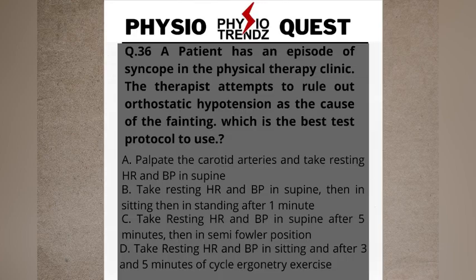Moving forward to the next question asked this week: a patient has an episode of syncope in the physical therapy clinic and the therapist attempts to rule out orthostatic hypotension as the cause of fainting. Which is the best test protocol to use? Option A: palpate the carotid arteries and take resting heart rate and blood pressure in supine. Option B: take resting heart rate and blood pressure in supine, then sitting, then standing after one minute. Option C: take resting heart rate and blood pressure in supine after five minutes, then in semi-Fowler's position. Option D: take resting heart rate and blood pressure in sitting and after three and five minutes of cycle ergometry exercises.